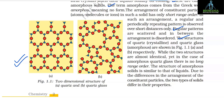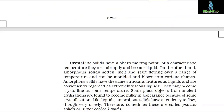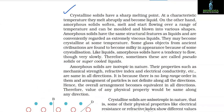In amorphous quartz glass there is no long range order. The structure of amorphous solids is similar to that of liquids. Crystalline solids have a sharp melting point — at a characteristic temperature they melt abruptly and become liquid. Amorphous solids, on the other hand, soften and start flowing over a range of temperature and can be molded and blown into various shapes. They are conveniently regarded as extremely viscous liquids and may become crystalline at some temperature.